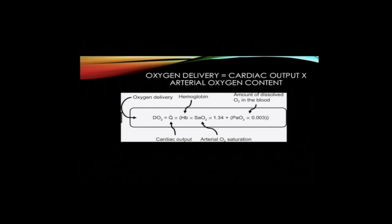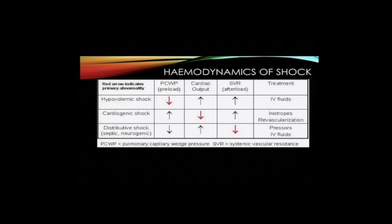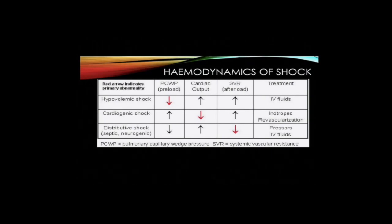Examination of the determinants of blood pressure and oxygen carriage reveals four primary cardiovascular parameters which may contribute to a state of shock. These four parameters are preload, cardiac myocardial contractility, heart rate, and systemic vascular resistance.